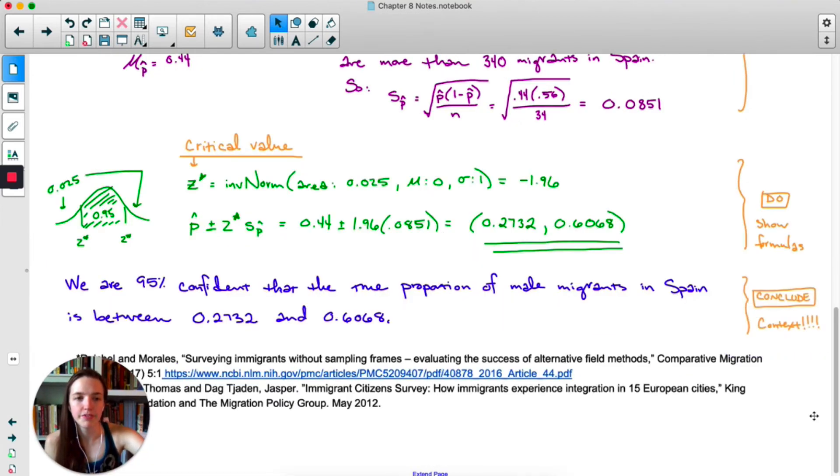And then here's conclude. You will notice I wrote context with several exclamation points because you must have context in your conclusion. The actual conclusion is basically a mad lib. You'll say we are blank percent confident that the true blank is between blank and blank. You can do it the same every single time. You do not have to come up with creative ways to write this sentence. In fact, it's just easier if you use this sentence structure. Don't try to get fancy and make up different ways of explaining things because odds are you'll say something wrong. But the main thing in the conclusion is make sure there's context. It shouldn't be a generic conclusion that could apply to any problem. It should be specifically about this problem, so male migrants in Spain.